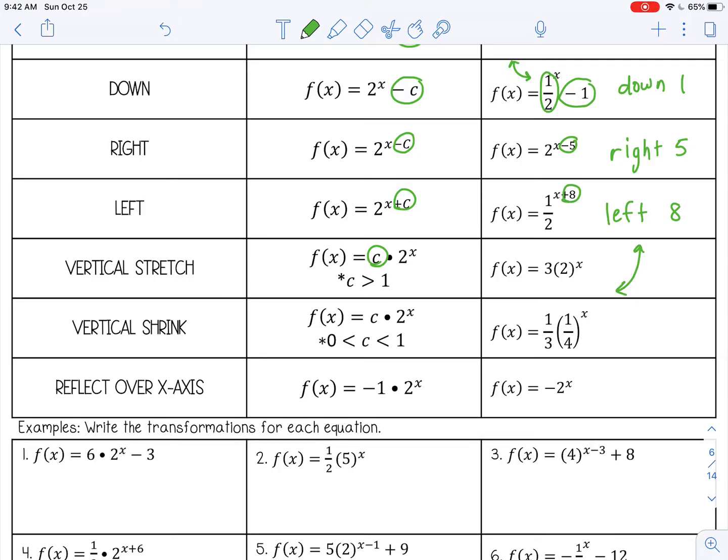A vertical shrink is where you multiply the whole function by a number between 0 and 1, so like 1/3. So this one, now this is a decay, but it's going to kind of be more flat. It's going to flatten out that curve.